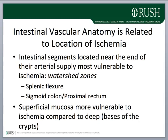Ischemic colitis should be suspected when focal colitis is identified in these watershed areas. Additionally, intestinal capillaries run from the bases of the crypts to the surface, then make a sharp hairpin turn into post-capillary venules. This makes the superficial mucosa more vulnerable to ischemia than the deep mucosa, which is reflected in the pathological changes seen in early acute or chronic ischemia, where the superficial mucosa is more affected.